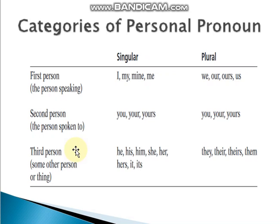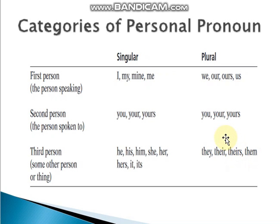Third person refers to some other person or thing. Singular: he, his, him; she, her, hers; it, its. In plural: they, their, theirs, them. So these are the categories of personal pronouns — you have to remember them. When these words are used in sentences, you have to match them correctly. When you go from singular to plural, many mistakes can happen, so you need to know how first person, second person, and third person vary in singular and plural.